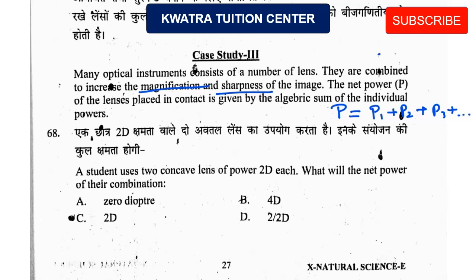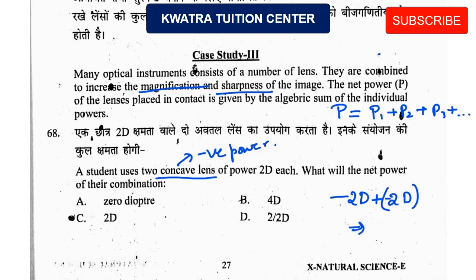Question: A student uses two concave lenses of power 2D each — what is the net power of their combination? Concave lenses have negative power because their focal length is negative. So each lens is −2D. Adding them: −2D + (−2D) = −4 diopter. The answer is 4 diopter (written as 4D in the options).